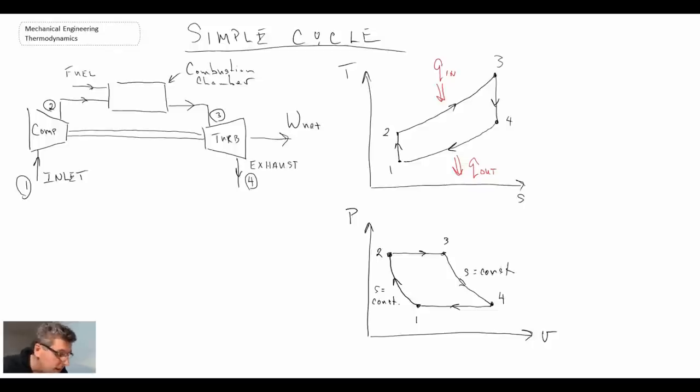So putting our heat addition and heat rejection on here. This is where we have Q in and then down here is where we have Q out. So labeling the different steps of our process, what we have is one to two is isentropic compression. Two to three is constant pressure heat addition.